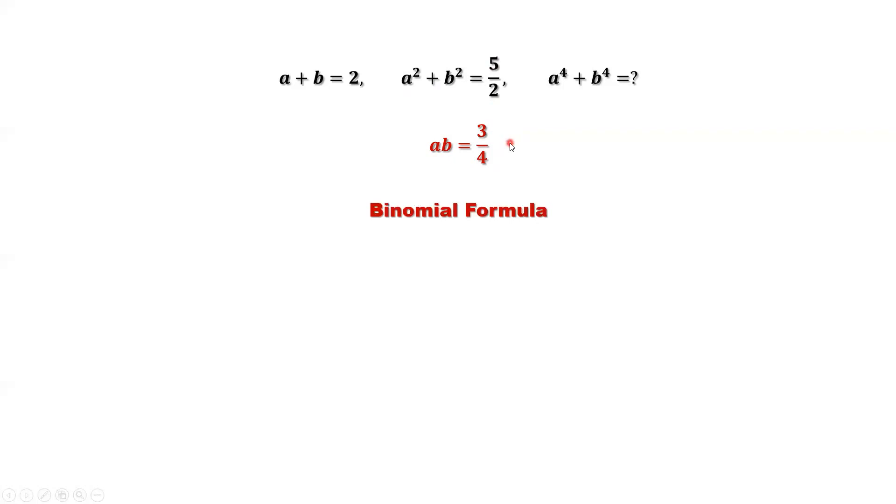Here is the binomial formula. a plus b to the power 4 equals a to the power 4 plus 4 times a to the power 3 times b plus 6 a squared times b squared plus 4ab to the power 3 plus b to the power 4.